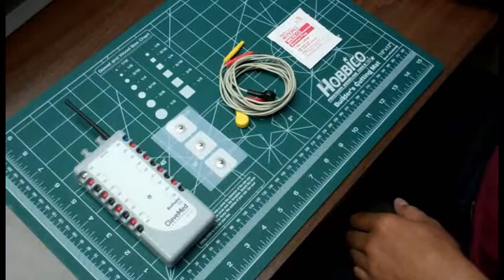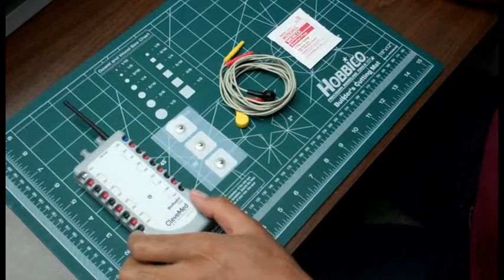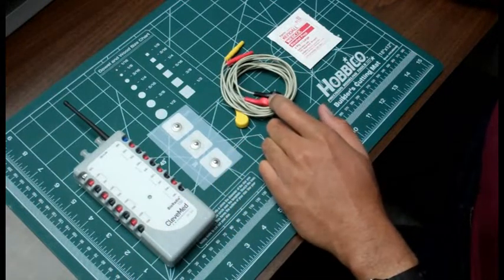This is a quick tutorial for recording EMG with the bioradio. You'll need the bioradio, three electrodes, three electrode cables, and an alcohol wipe.